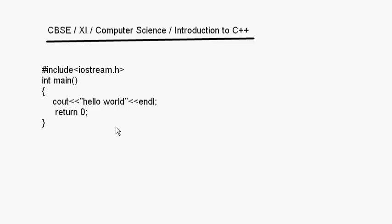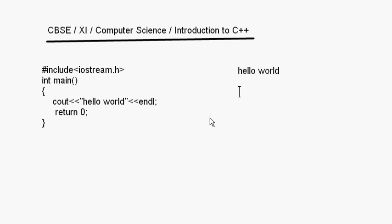Today let's start with C++ and I'm going to teach you how to write the first program in C++, the simplest of programs. Here I have written some code: hash include iostream.h, then int main, an opening curly bracket, then cout and hello world and endl, then return 0 and a closing bracket. When we run this program the output will be hello world. Now let's try to understand what this program means.